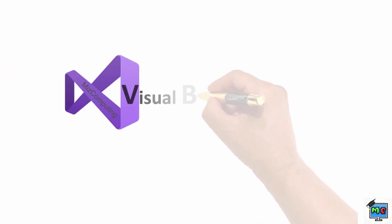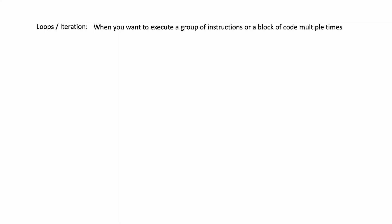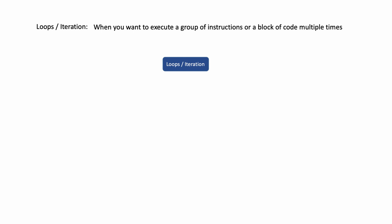What we're going to be learning now is iterations, also known as loops. A loop is something you repeat more than once — same thing as iteration. Iteration is when you want to repeat a section of code or a line of code — you want to repeat that as many times as you want.